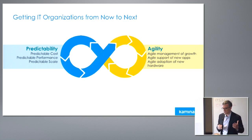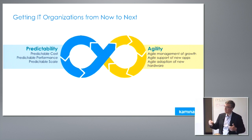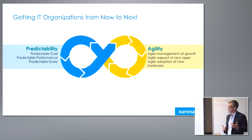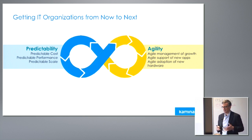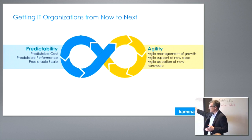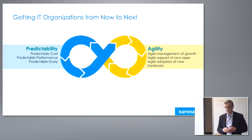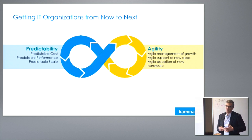What this comes down to is predictability and agility. Predictability in the sense that an IT operations manager needs a storage solution with predictable cost, predictable performance, and predictable scale over time — delivered by agility. Agile management of growth means that as a business scales, adding more users, devices, and applications, the storage infrastructure has to evolve with that. Agile support of new applications means the solution evolves as workloads change and become more dynamic. The ability to take advantage of denser drives, faster compute, and more efficient networking is a key element of the Commonario strategy.